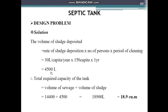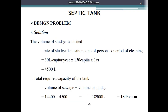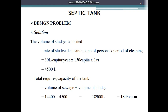The total required capacity of the septic tank = volume of sewage (14,400 liters) + volume of sludge (4,500 liters) = 18,900 liters, or 18.9 cubic meters.